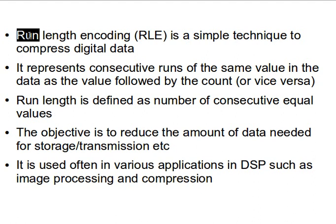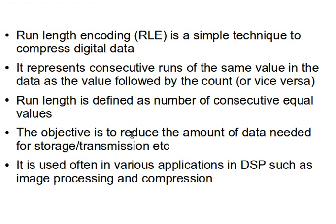The name actually explains it all: we have a run of consecutive values, we measure the length of that run, and we encode it as value and count or count and value. The run length is defined as the number of consecutive equal values. The purpose here is to reduce the amount of data — we have digital data and we want to reduce the amount of data needed for storage or transmission. When we have large amounts of data and expect consecutive runs of repeated values, we use Run Length Encoding to reduce the storage space needed or the size of the data for transmission via network.